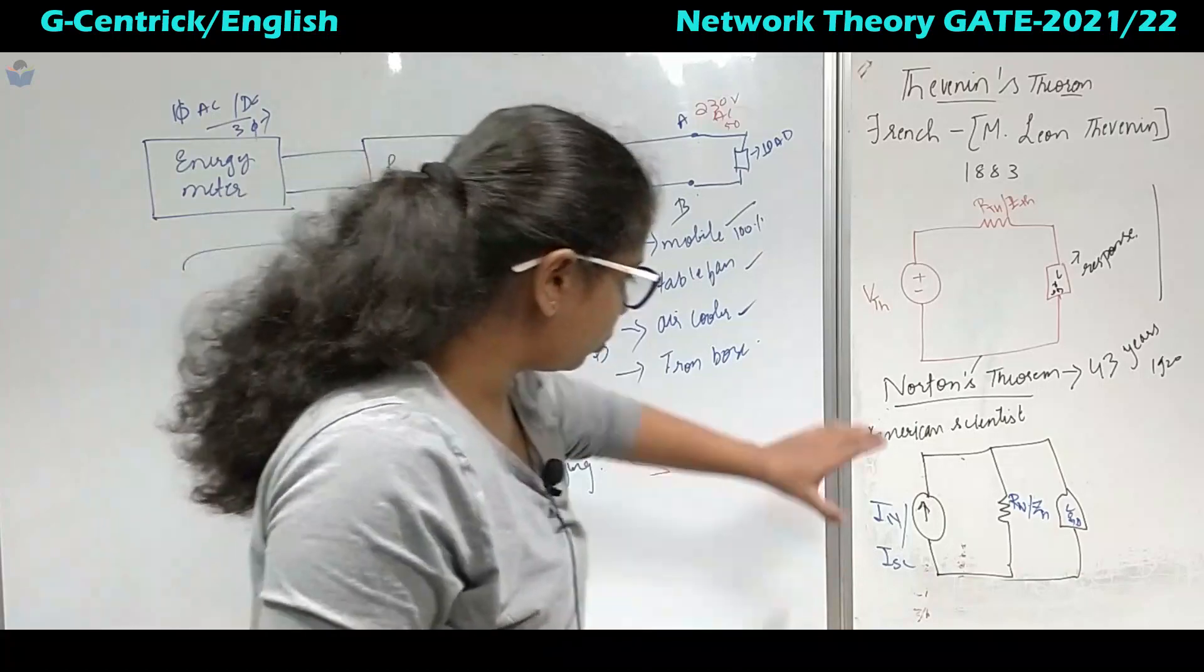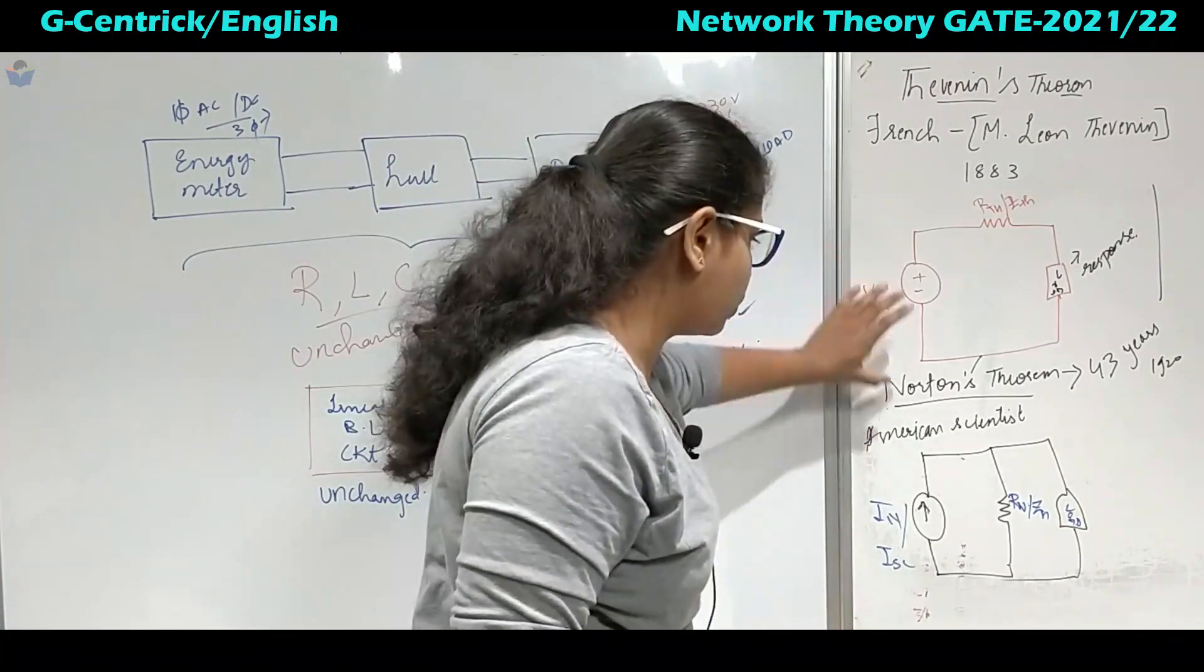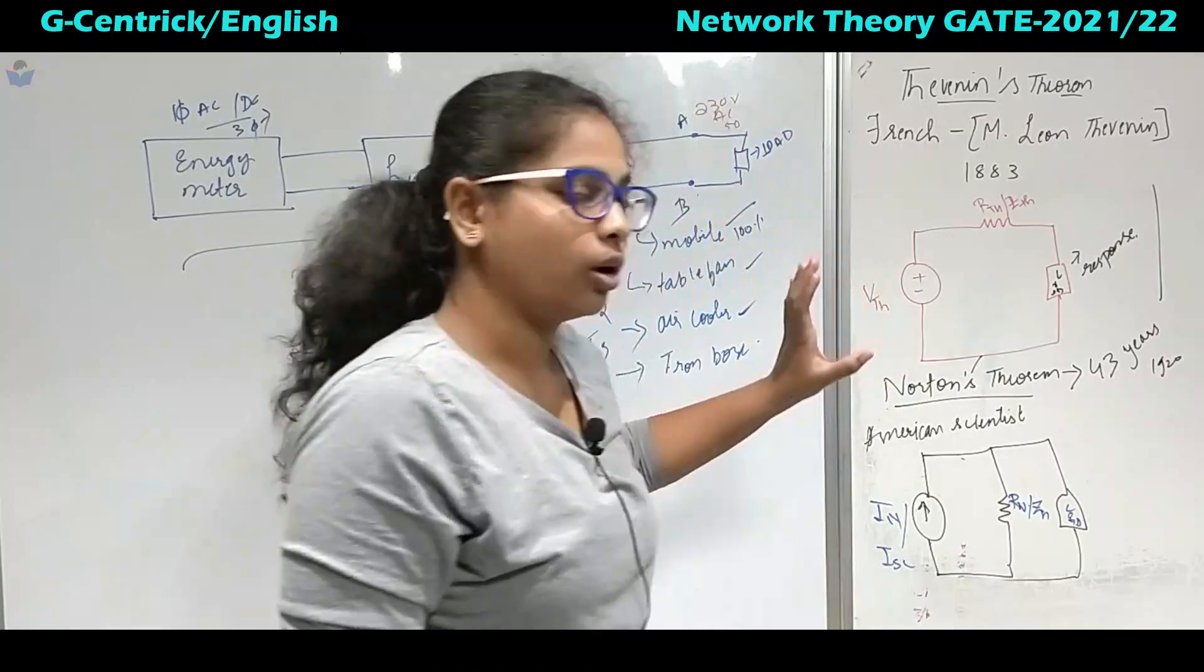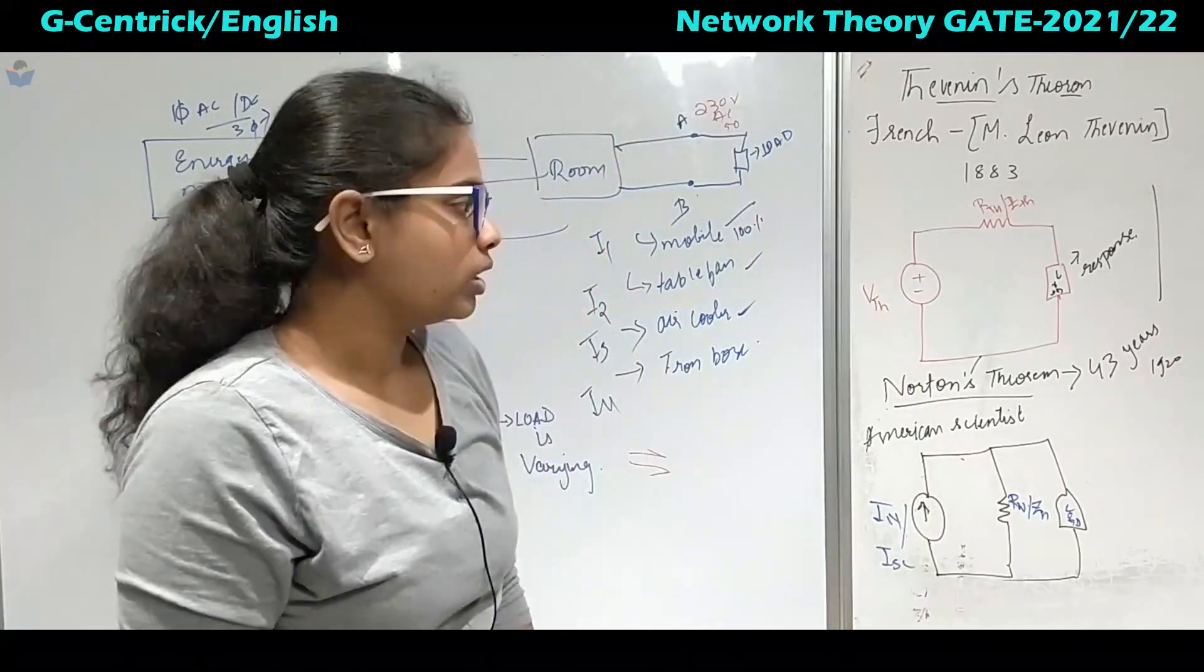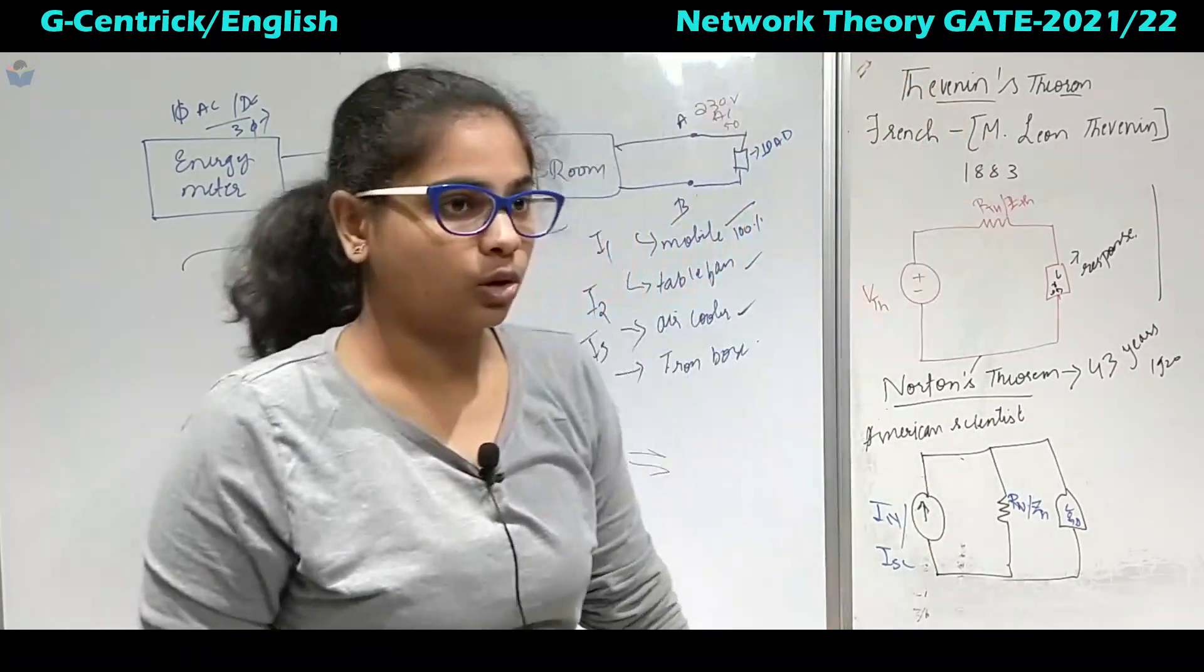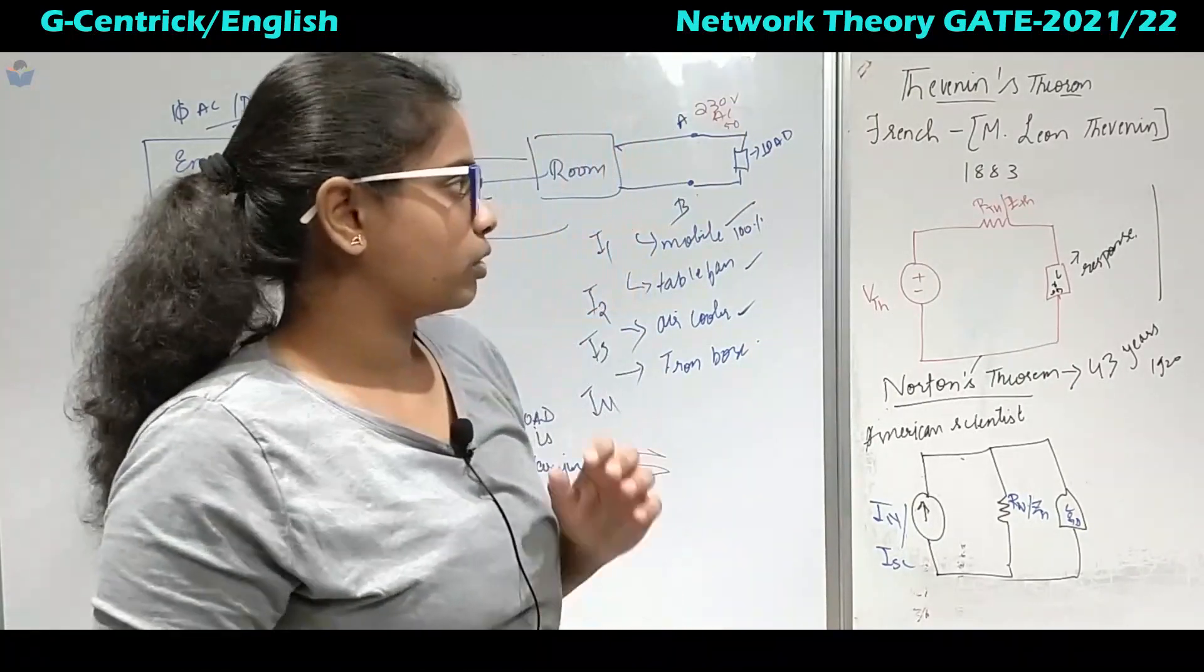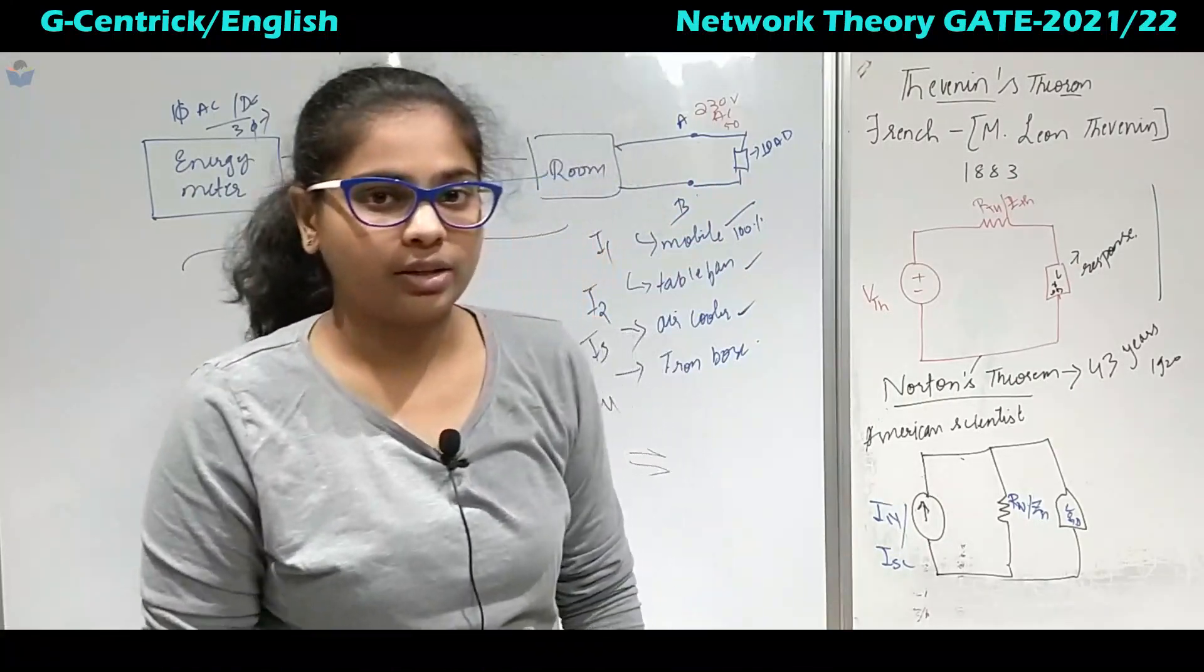Now if you observe this both of them, it is nothing but the source transformation technique. He has used the source transformation and said it as dual of the network. Both are same but we have to apply wherever it is necessary. We can apply Thevenin and we can apply Norton also. Gate question they have, they will ask it from Thevenin concept. Most of the questions every year one question will be from this concept. From next lecture onwards we will solve the problem so that this concept will be more clear. Thank you.